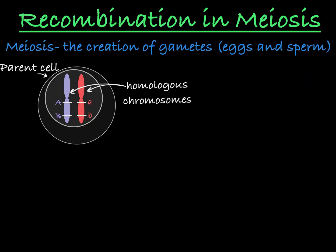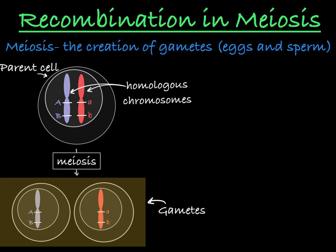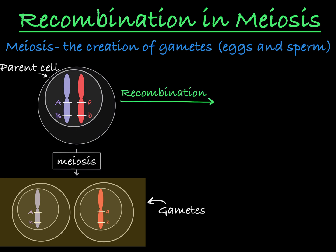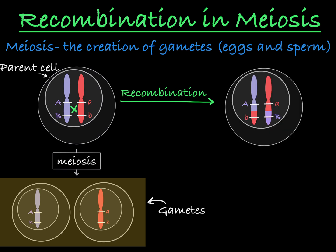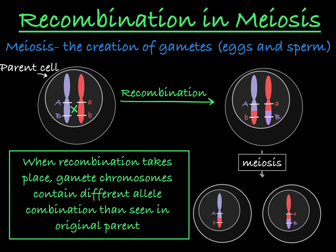Meiosis is the process that creates gametes, which are sperm and eggs. In meiosis, recombination can occur between two homologous chromosomes. A recombination event allows the homologous chromosomes to swap portions. When this happens, the final gametes produced have different allele combinations on their chromosomes than you see in the original parent.